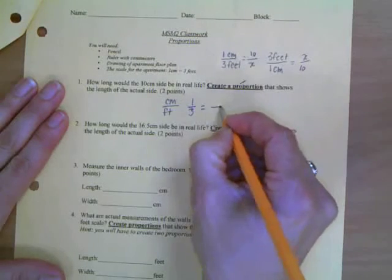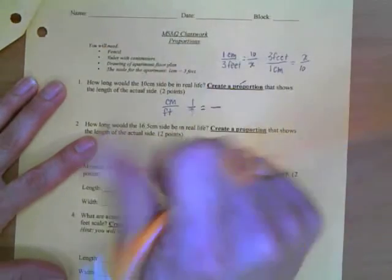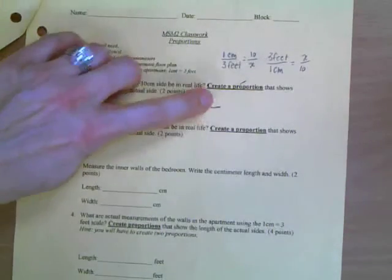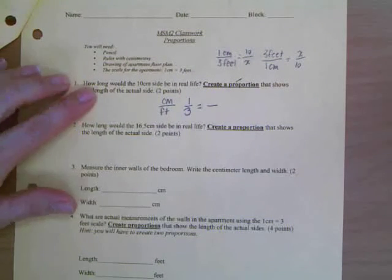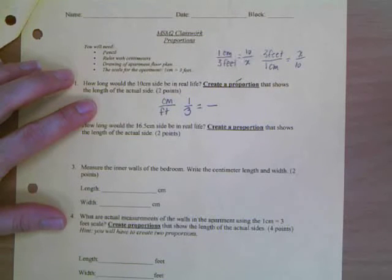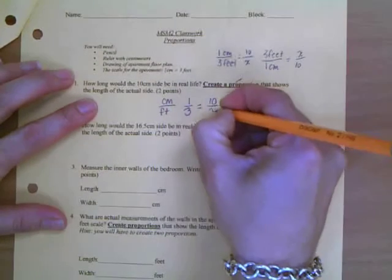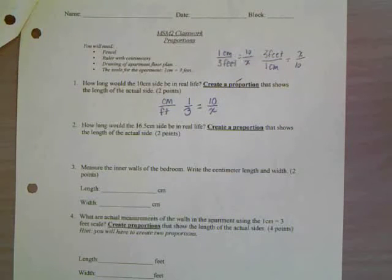So Blake, what goes on the top and the bottom of my next ratio? I've got one centimeter equals three feet. How do I, how's my second fraction look? How long would the 10 centimeter side be in real life? You put the 10 centimeter on the top. That's right. And what do I put on the bottom? X. Yup. Why put an X? Because I don't know how many feet. That's what it's asking me.